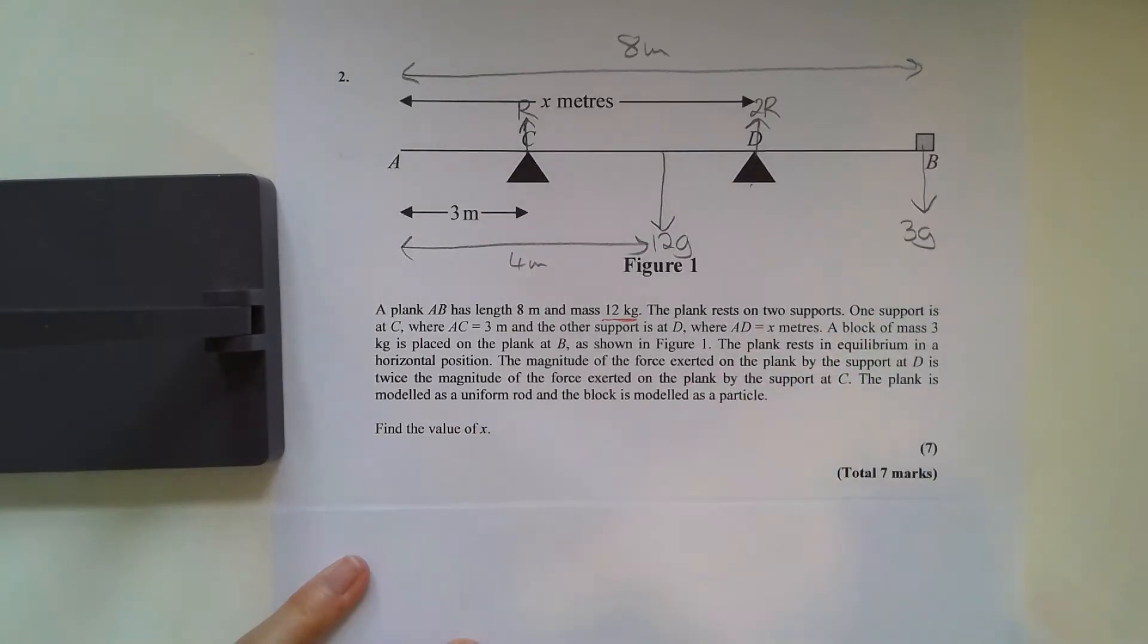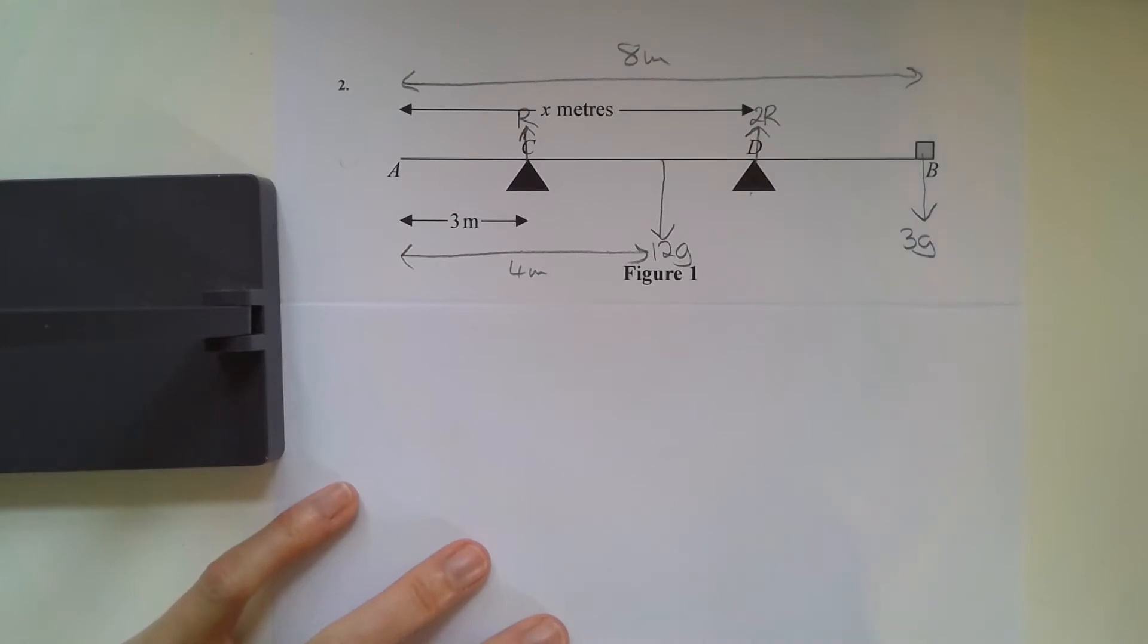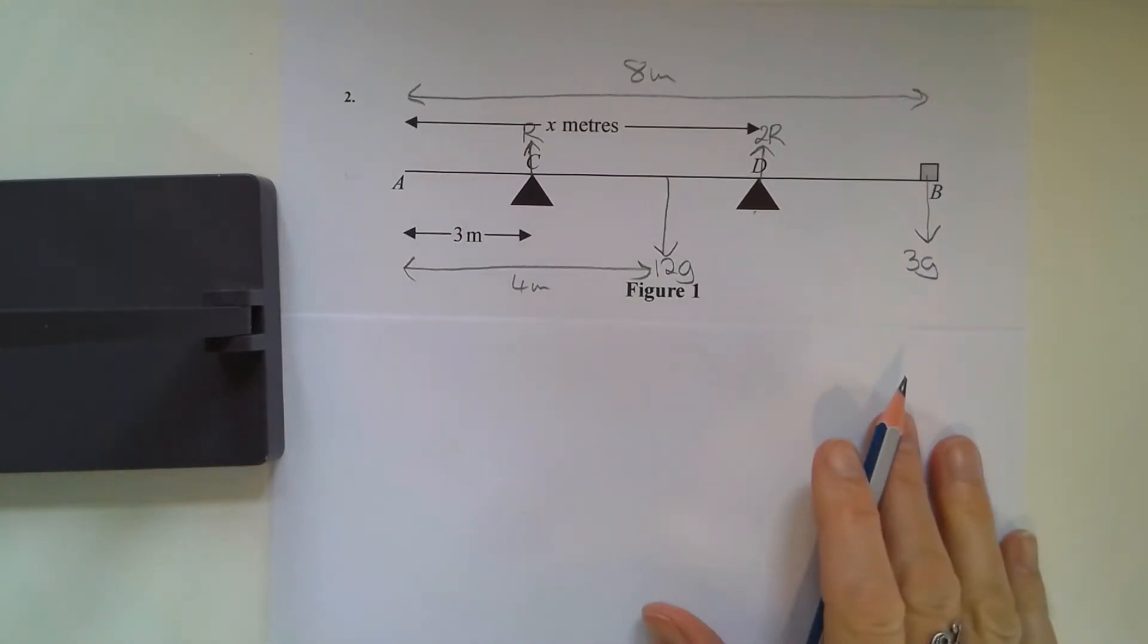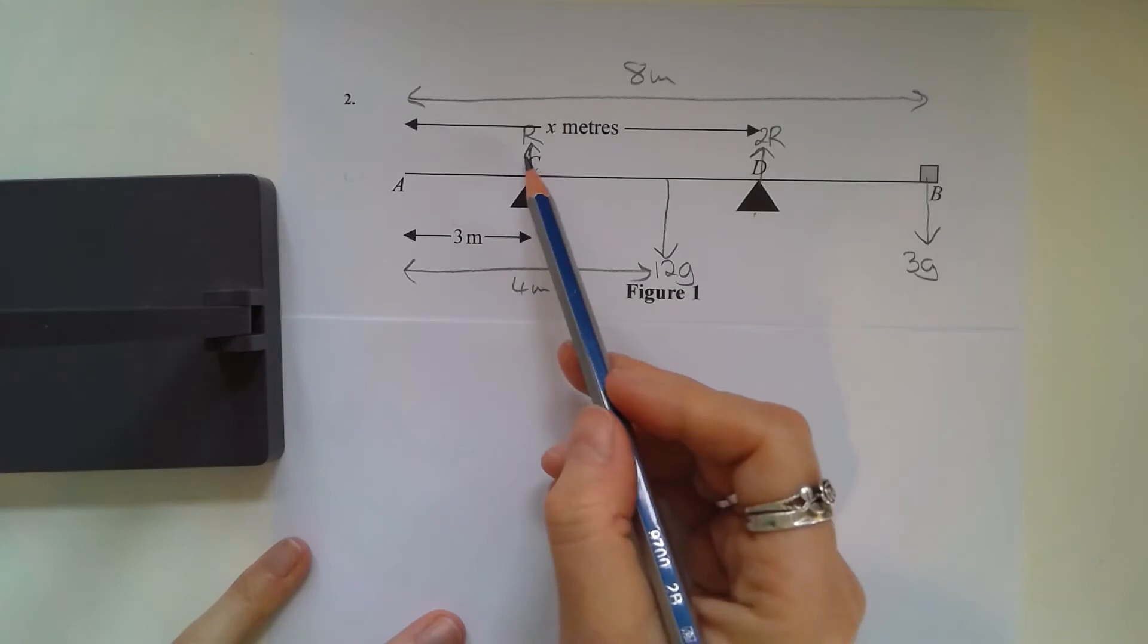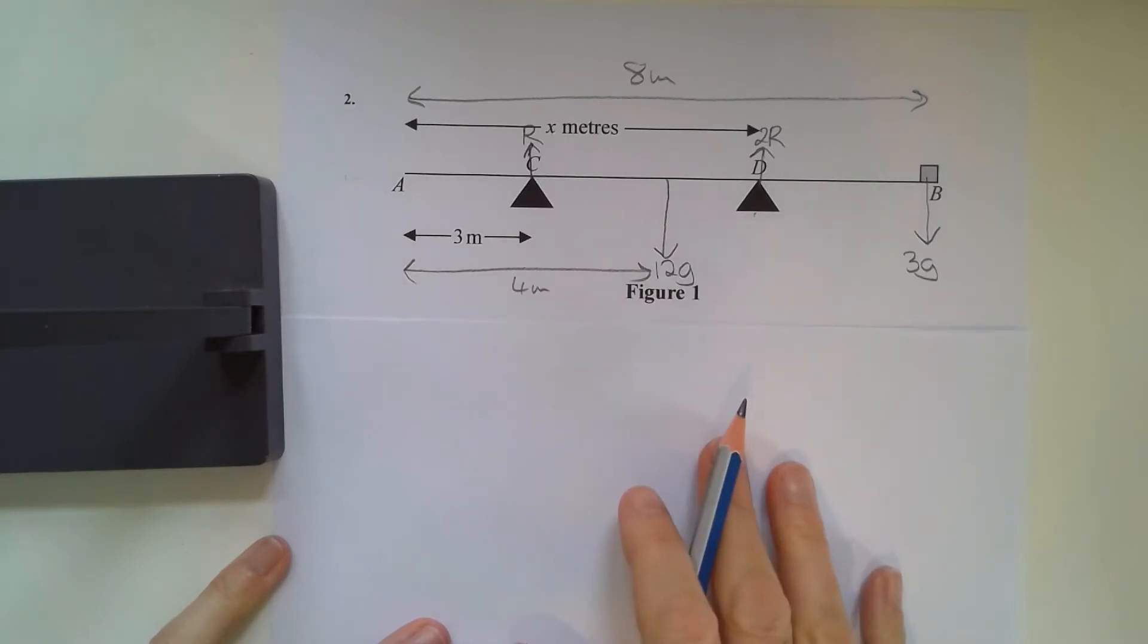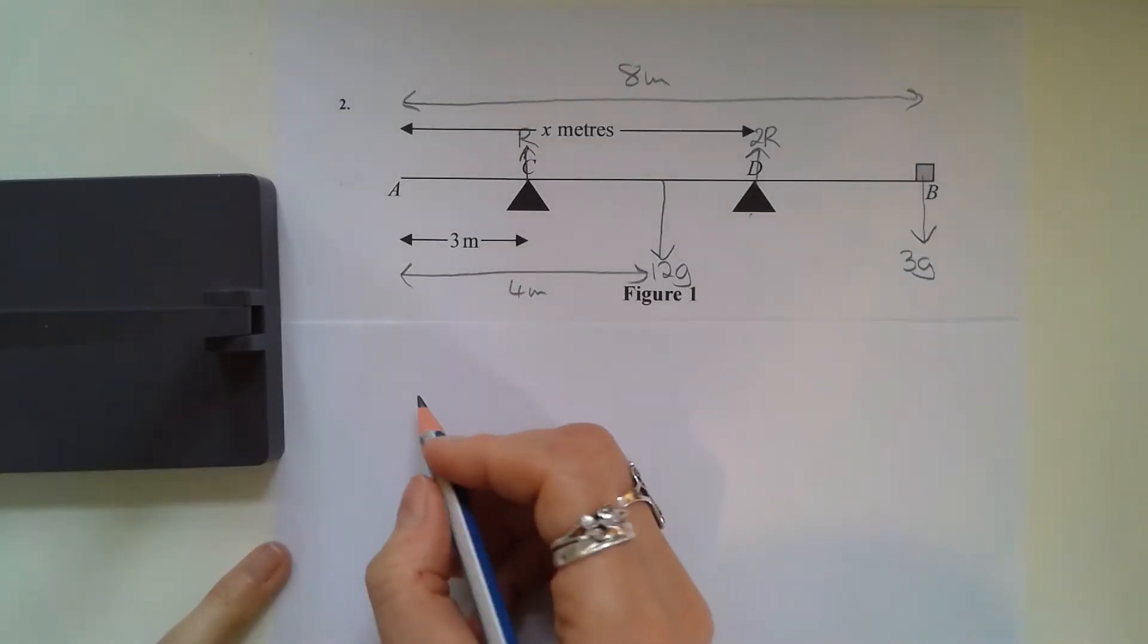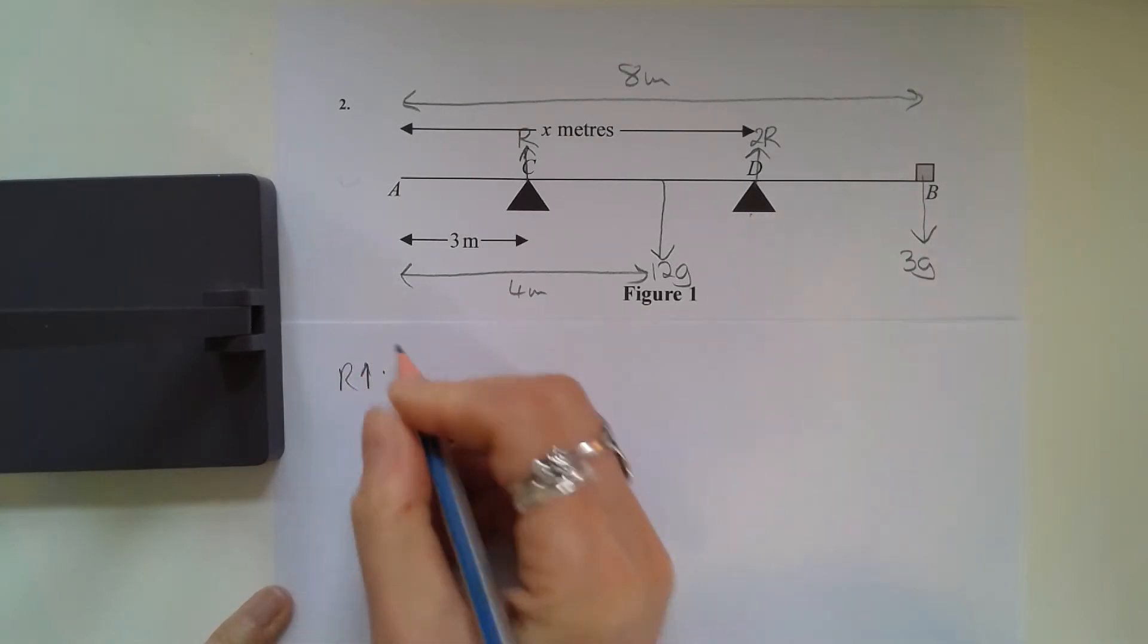As normal, find the value of x. So we have several things that we can do. We can take moments and we can also resolve vertically, which usually leads to a simpler equation. We have an unknown R and an unknown x, so we'll need to resolve vertically and take moments.